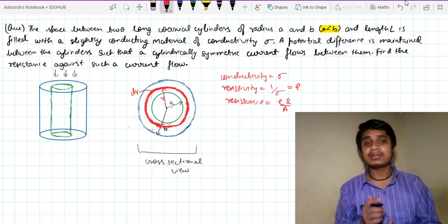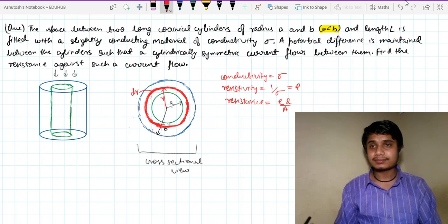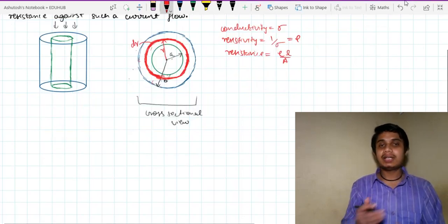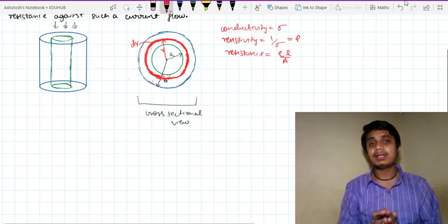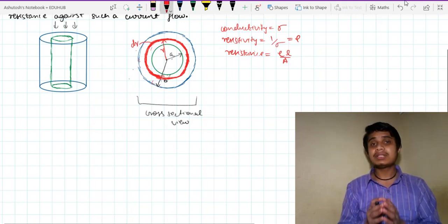Now I will find the resistance of this chosen cylindrical shell. So just tell me, what is the area through which the current flows normally?